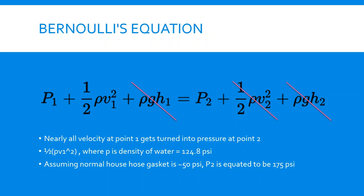Here's Bernoulli's equation. After doing some cancellation and plugging in some numbers that we calculated before, we get that P2 can be about 175 psi assuming that no losses exist.